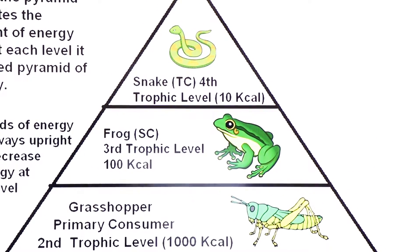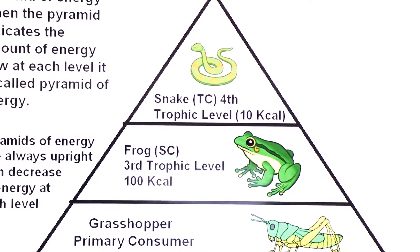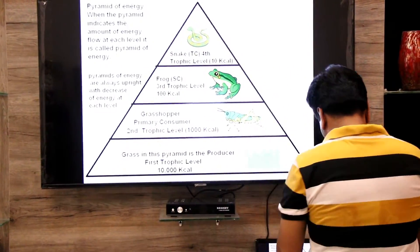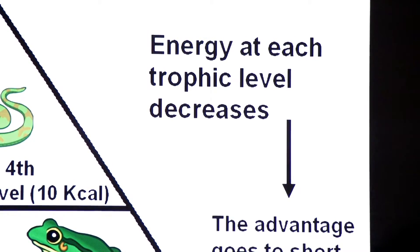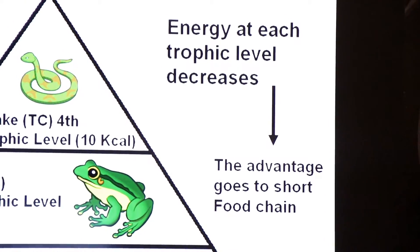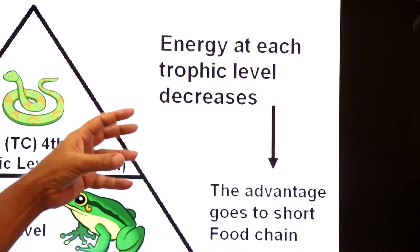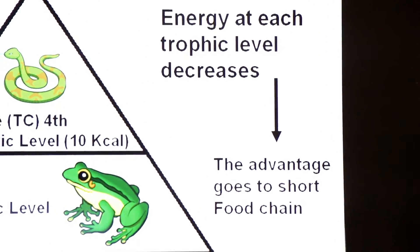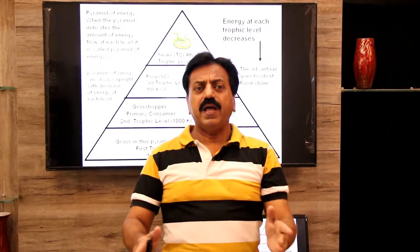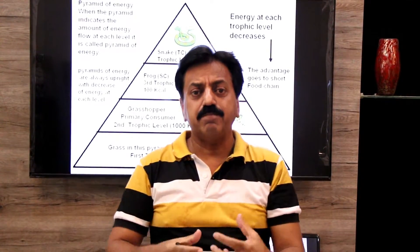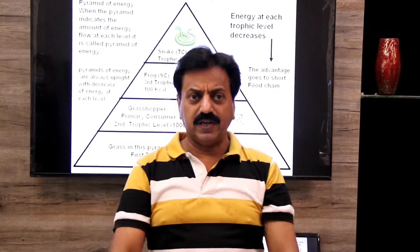At every stage there is a loss of energy — 90% is lost as heat at each level. There is a gradual decrease of energy at each trophic level. Since energy decreases at each level, the advantage goes to a short food chain. A human being is sometimes part of a longer food chain and sometimes part of a shorter food chain. When part of a longer food chain, they receive less energy; when part of a shorter food chain, they receive more energy.